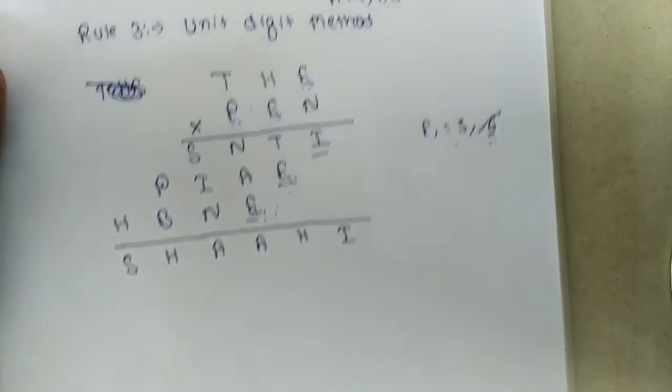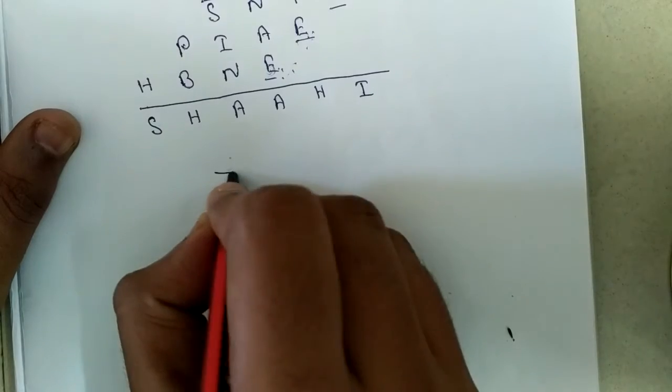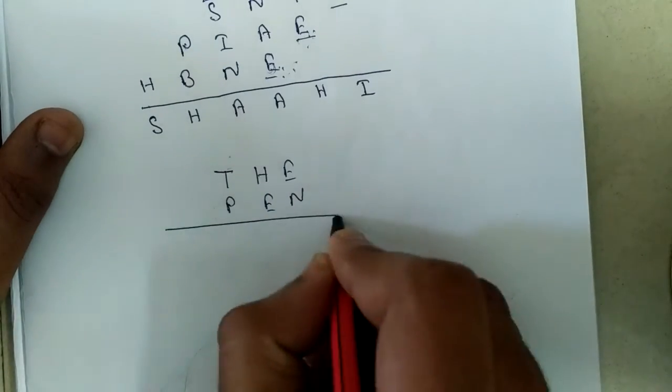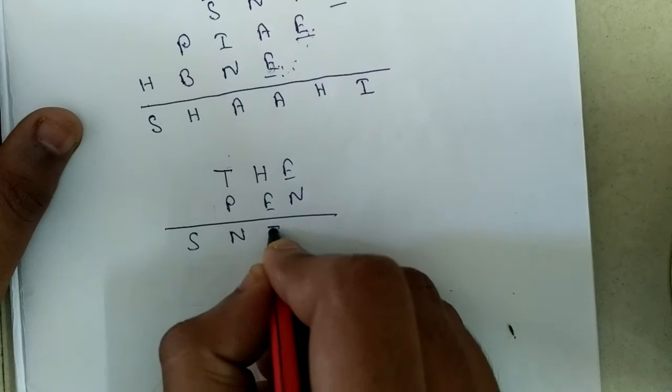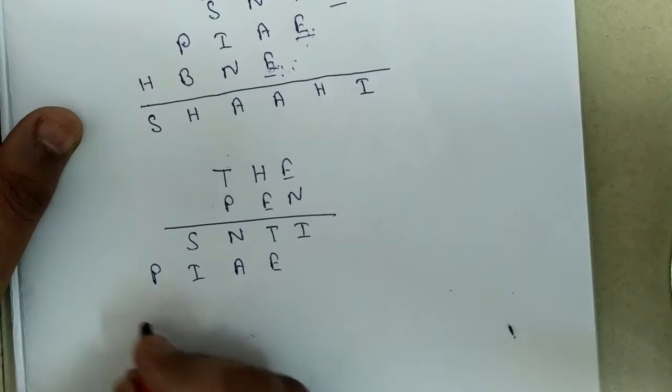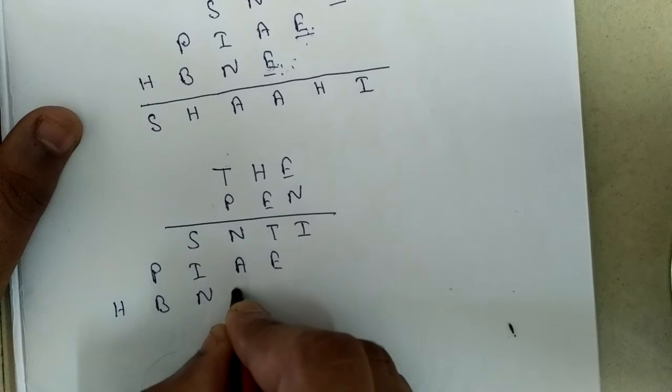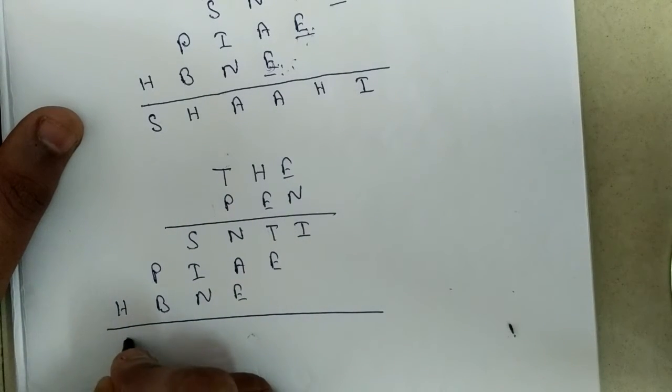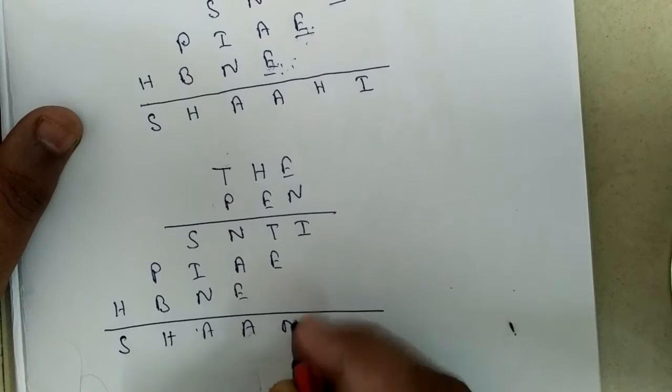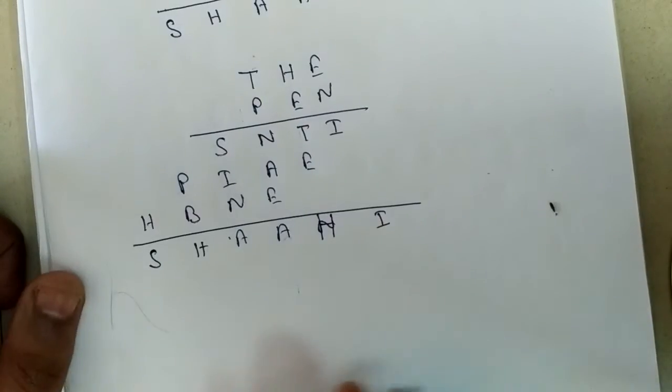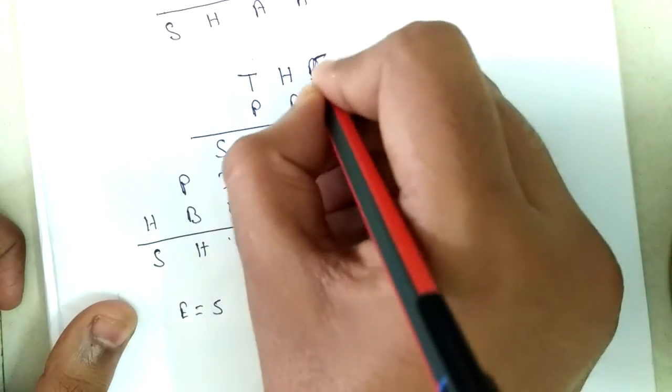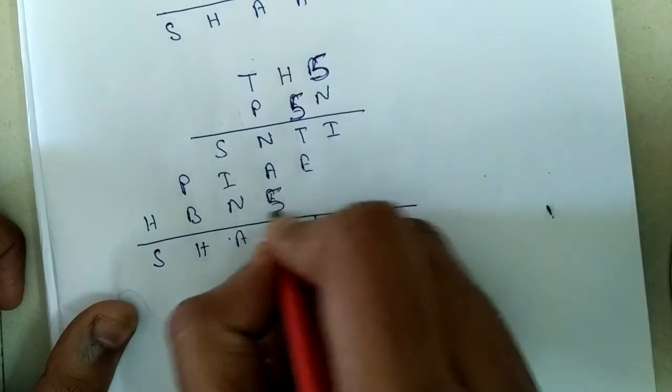What we have concluded, E equal to 5. So we have to write everywhere E equal to 5.